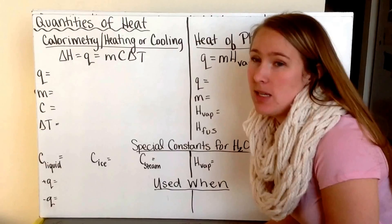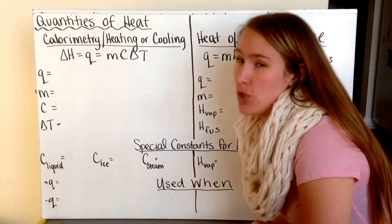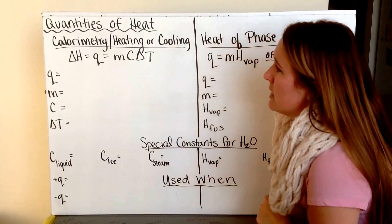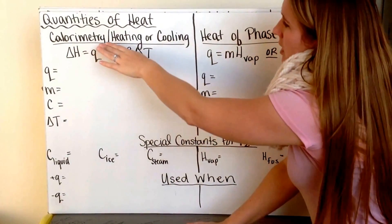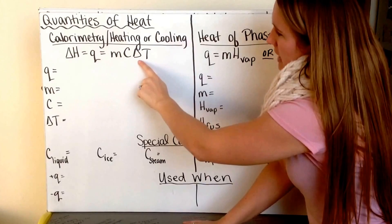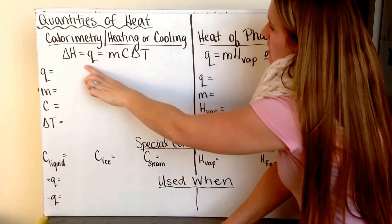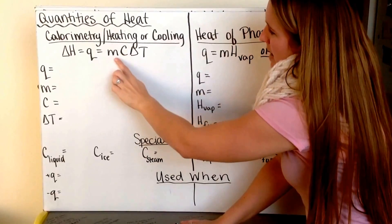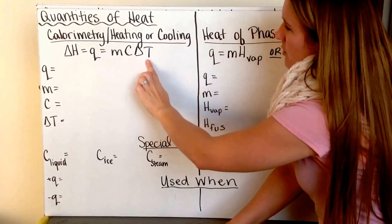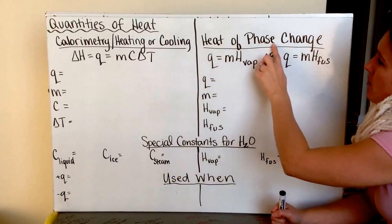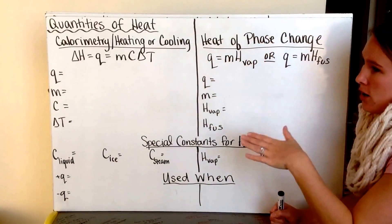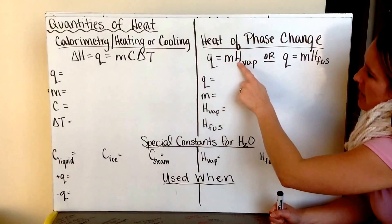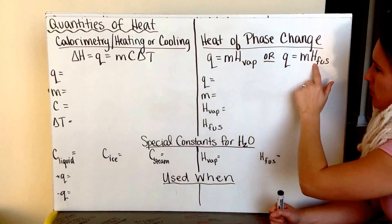This video is on quantities of heat. There are two major equations we can use when looking at factors of heat and their quantity. We can either use our calorimetry equation where we have changes in temperature, using delta H equal to Q equals MC delta T — mass times specific heat times change of temperature — or we can look at the heat of a phase change, which has the equation Q equals M times H_vap or Q equals M times H_fusion.